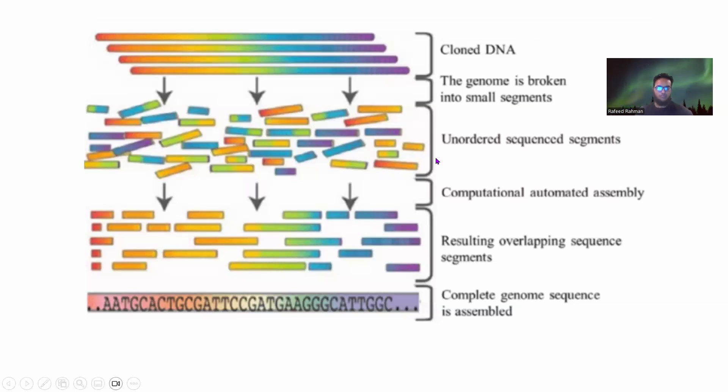The main goals of sequencing are two things: how exactly we want to fragment this large long DNA, and number two, which is the main thing, how exactly are we going to read these fragments. That's what we're going to discuss for Sanger sequencing.